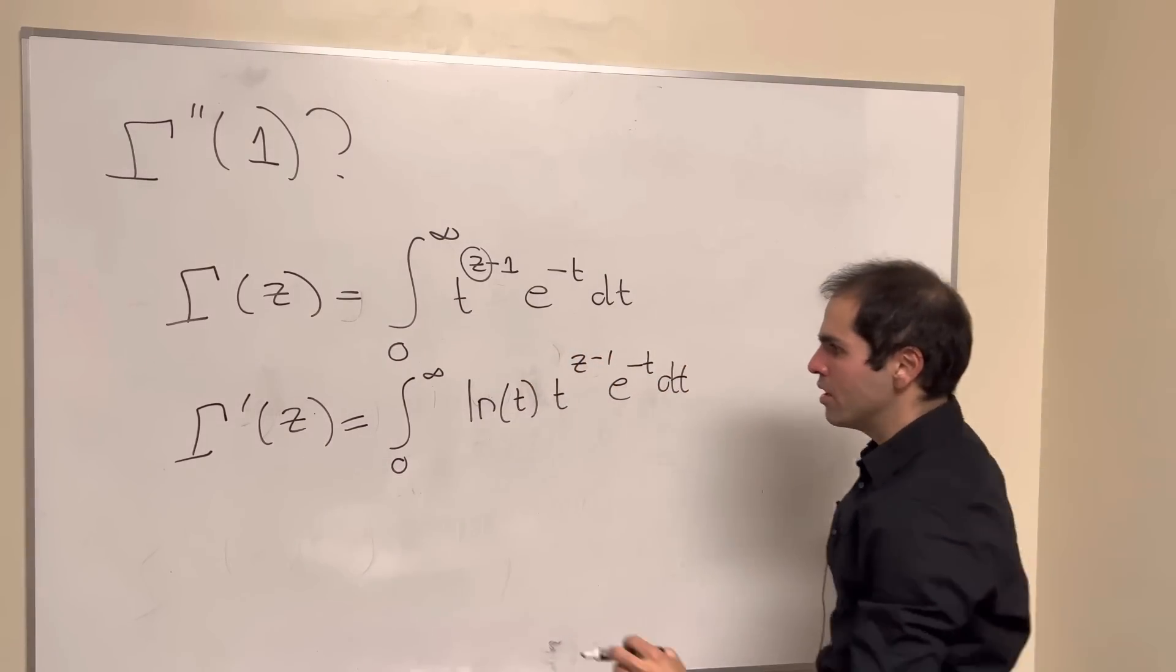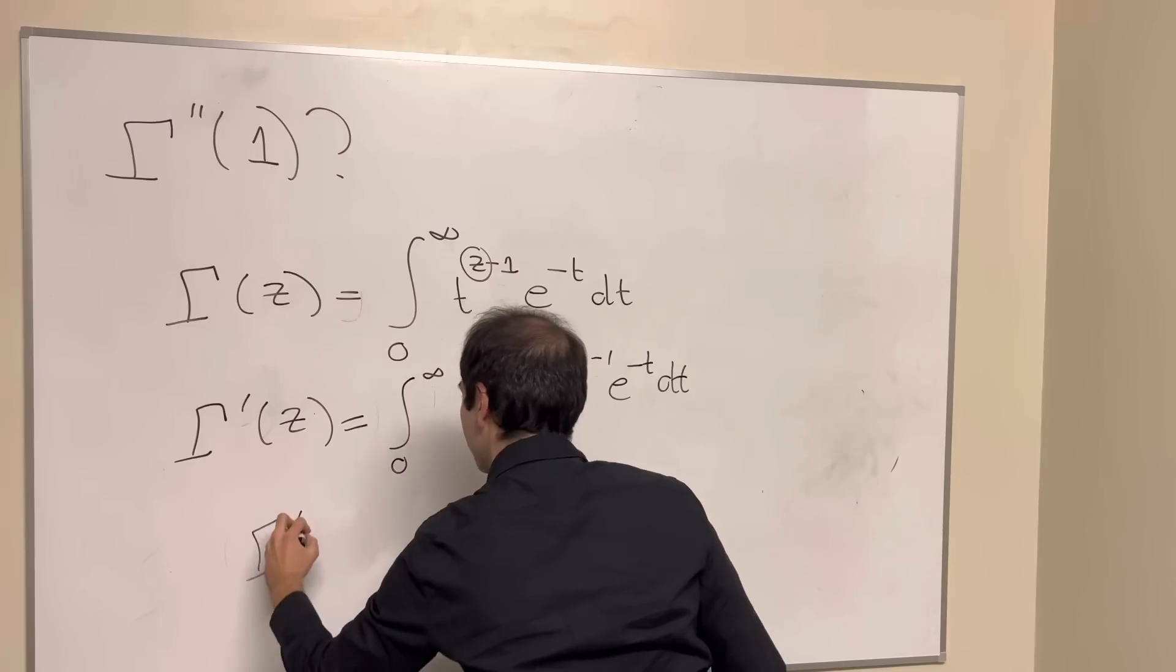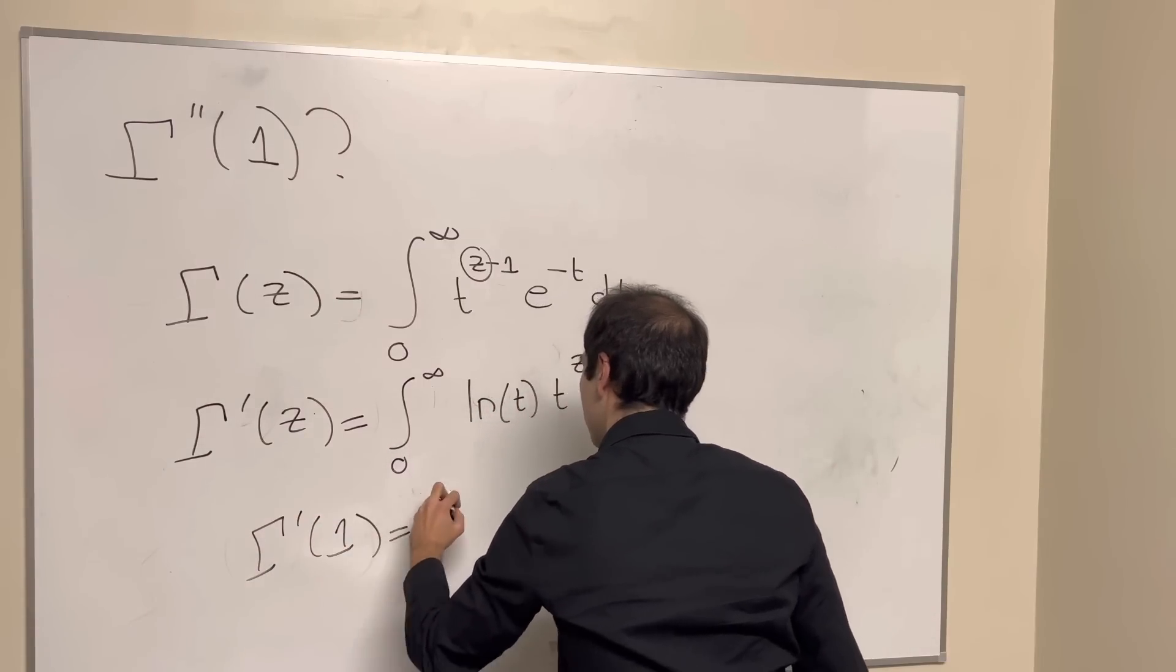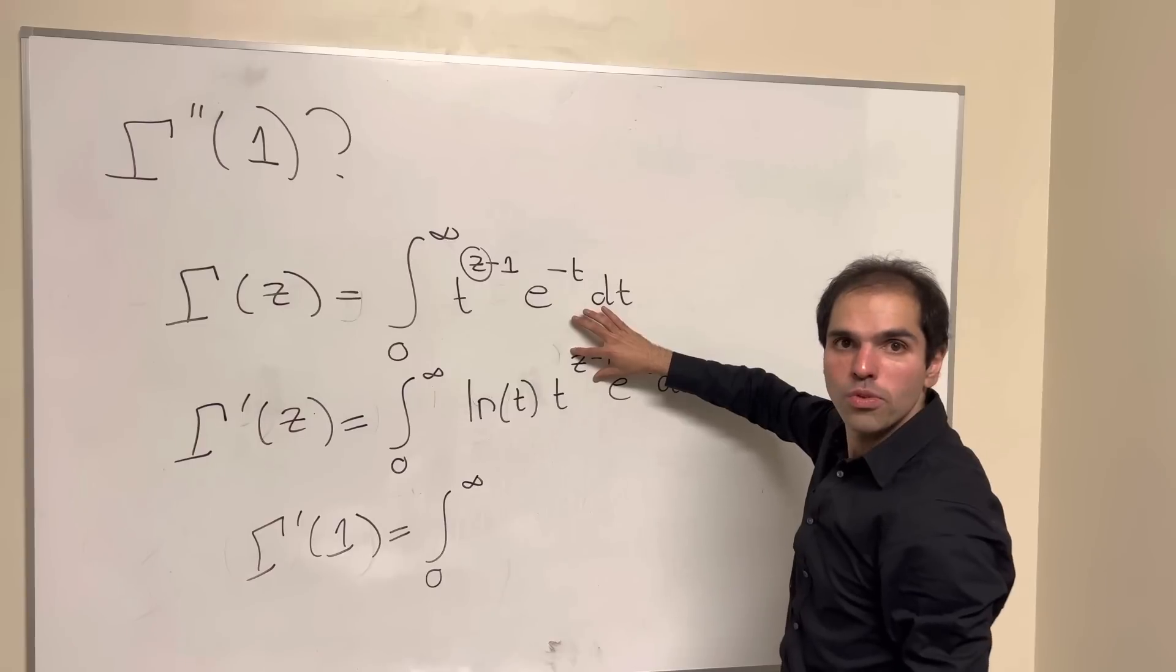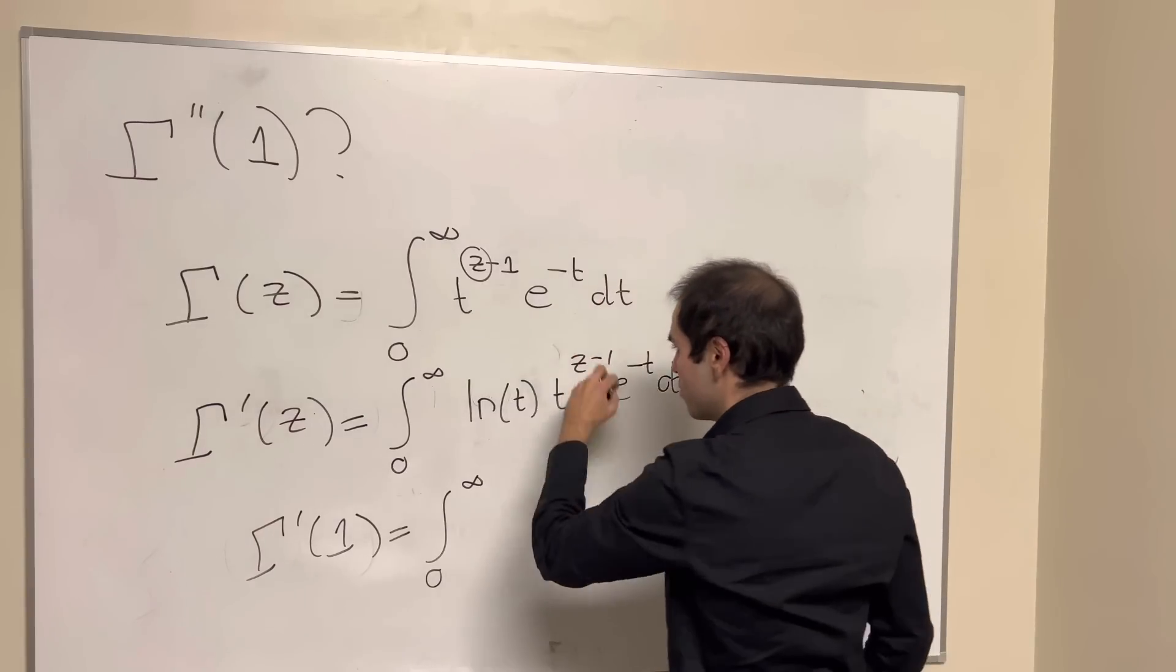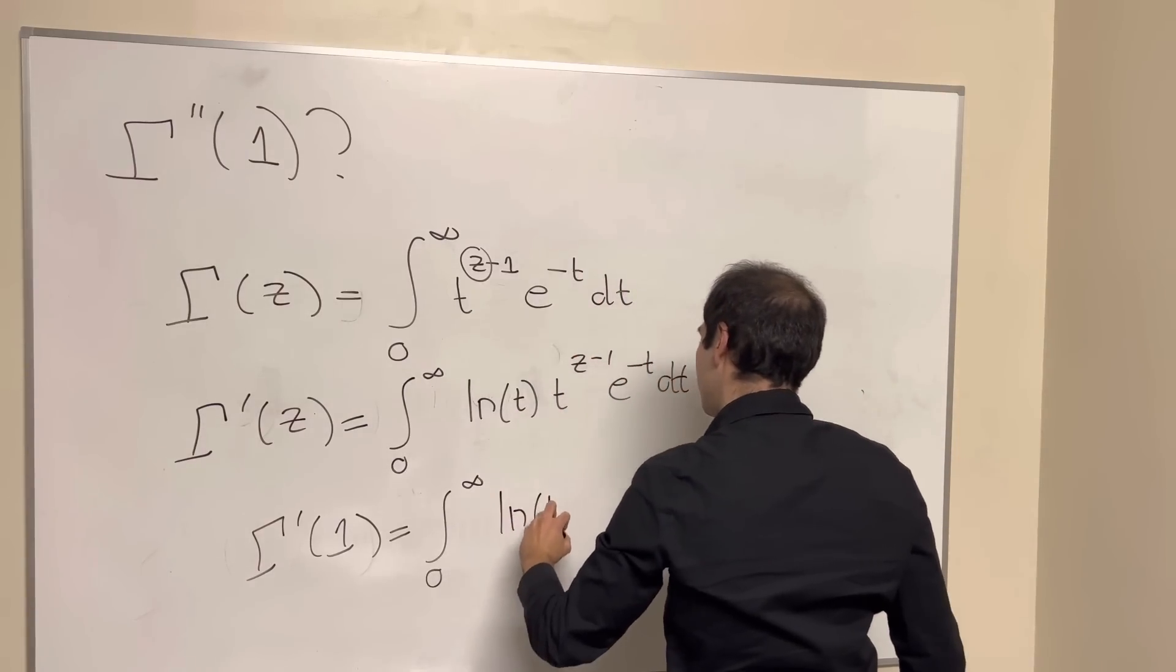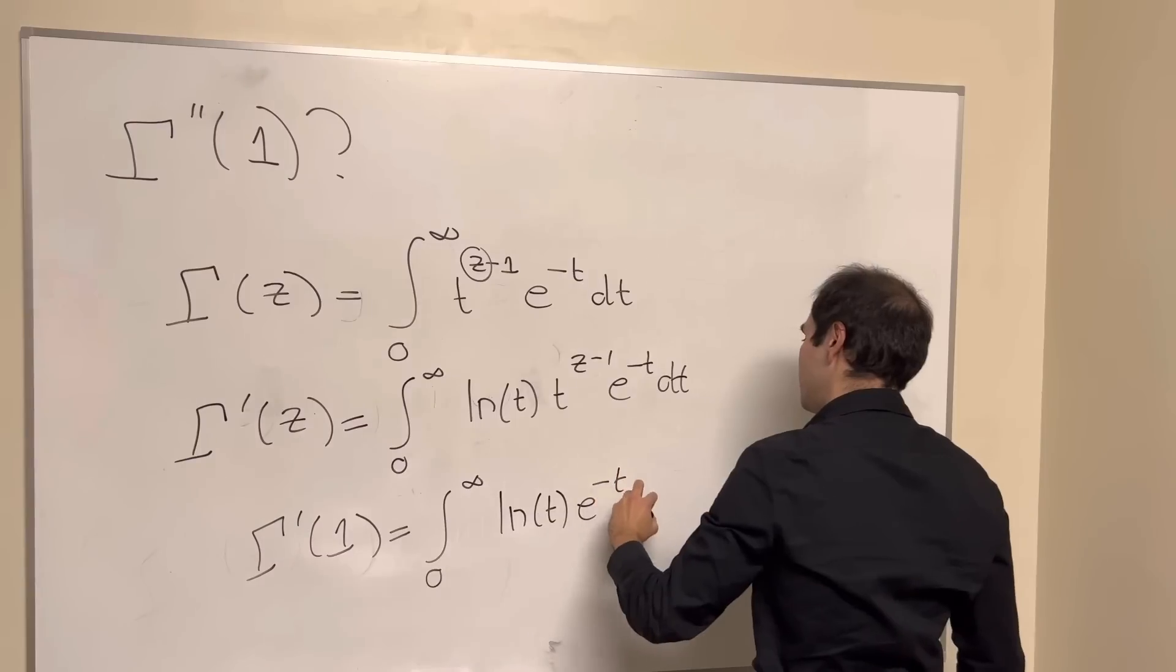And so the derivative at 1, that is integral from zero to infinity of, you plug in z equals 1, so this becomes 1, and you get ln of t, e to the minus t dt.